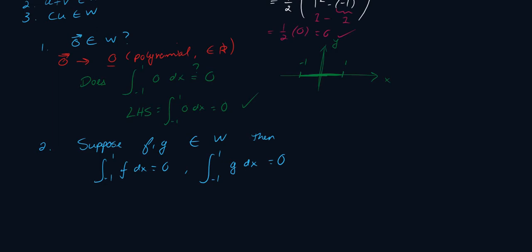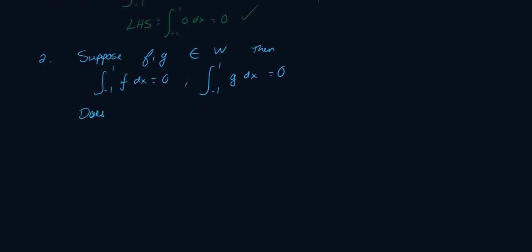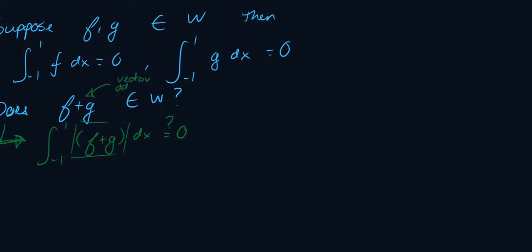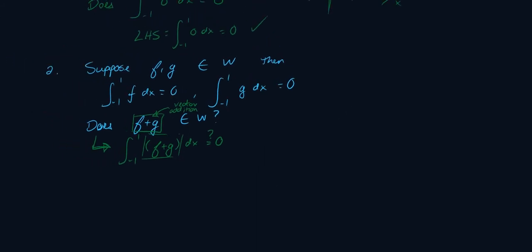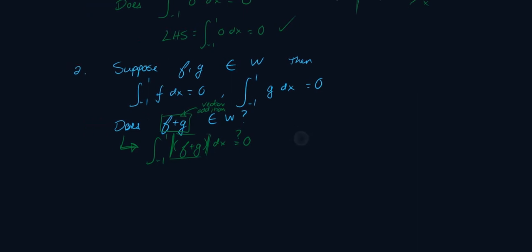Now what I want to check is: does f plus g belong to W? What this translates to is: is the integral from minus 1 to 1 of (f + g) dx equal to 0? We take f + g because that's our vector addition result, and we're trying to see if the result of the vector addition also belongs to W.